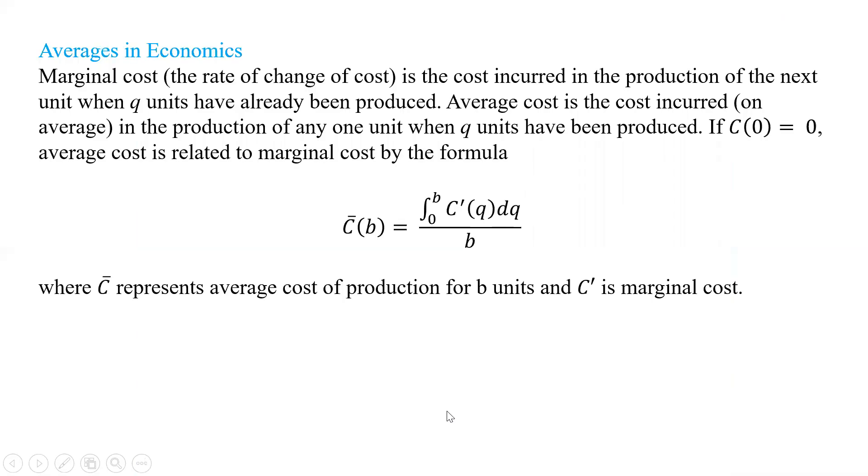Averages in economics is a little bit different. Marginal cost is the rate of change of cost - the cost incurred in the production of the next unit when q units have already been produced. Average cost is a cost incurred, on average, in the production of any one unit when q units have been produced. If c of 0 equals 0, the average cost is related to the marginal cost by this formula here. This is our marginal cost - if we take the integral from 0 to b, that number of units, divided by b, that's going to give us this value here. C bar is the average cost of production for b units, and c prime is our marginal cost. We just take the integral of the marginal cost divided by b, whatever that b is.